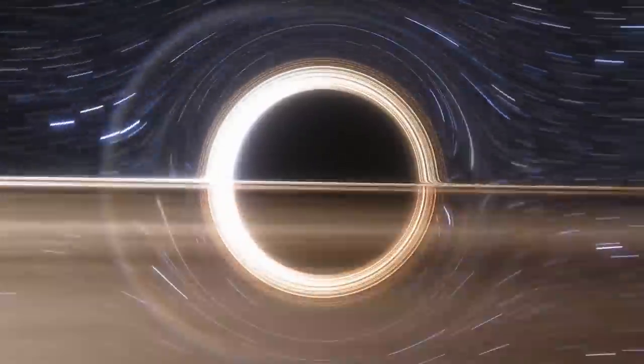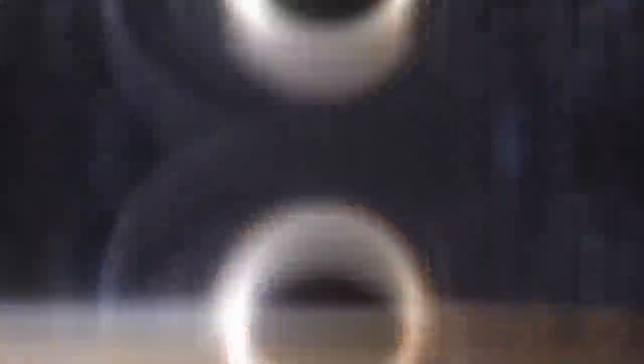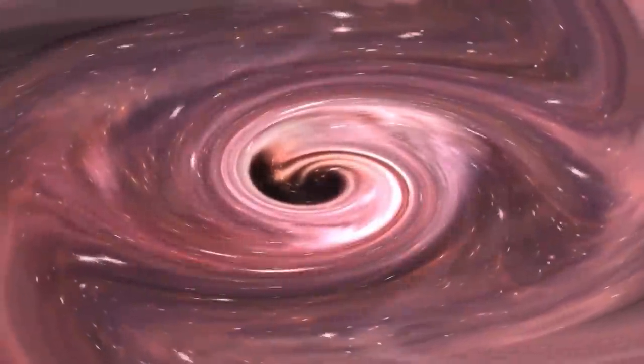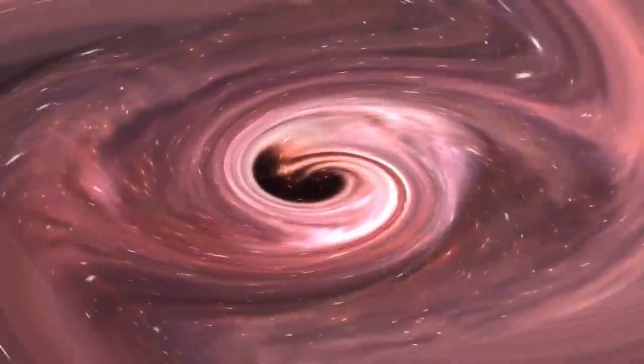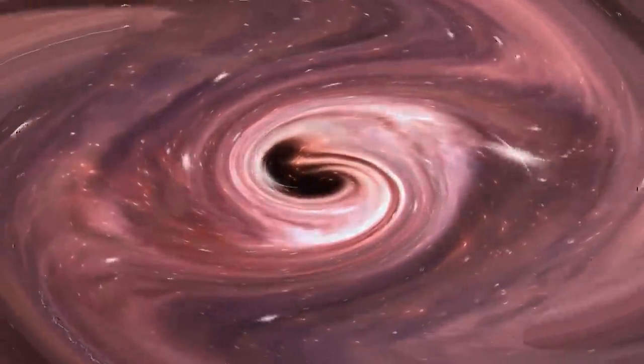The friction within the accretion disk of the black hole makes the plasma whirlpool at incredible speeds, which in turn makes it extremely hot. The plasma is so hot that it glows bright enough to drown out the entirety of the light emissions from the galaxy surrounding the black hole.